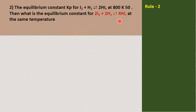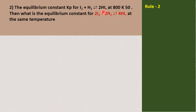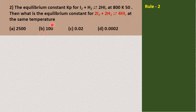Let us see the next question with a different rule. The equilibrium constant Kp for I₂ + H₂ ⇌ 2HI at 800 Kelvin is 50. Then what is the equilibrium constant for 2I₂ + 2H₂ ⇌ 4HI at the same temperature? Here, the first equation has been multiplied by 2, or doubled. So will the equilibrium constant also be doubled to 100? Let us see whether that is correct.